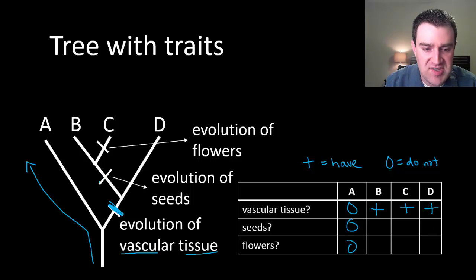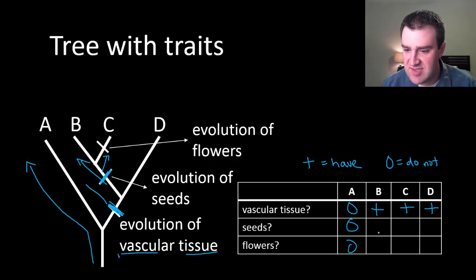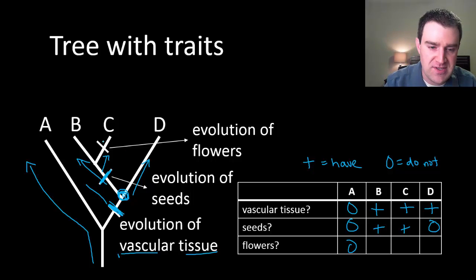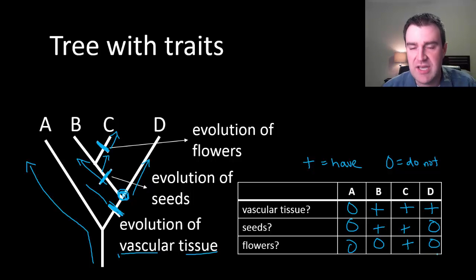Next, we could go to the seeds trait. We see it only evolved down this path leading to B and C eventually. So B and C have seeds, but D does not because D went down this path instead. And then finally, flowers. If flowers evolved right here, then it evolved on the path to C only and not B or D. That would be a quick example of reading a tree and showing us where the traits are present.